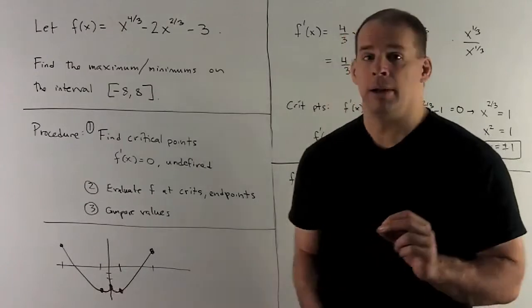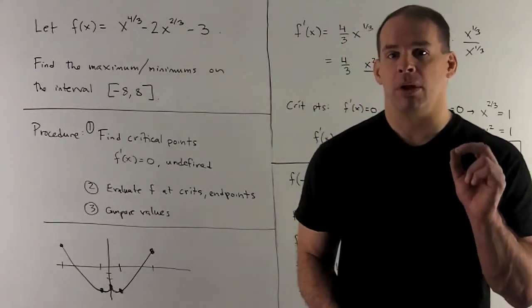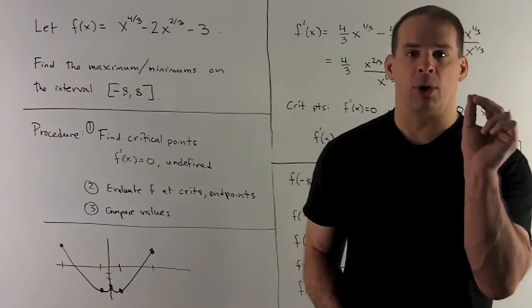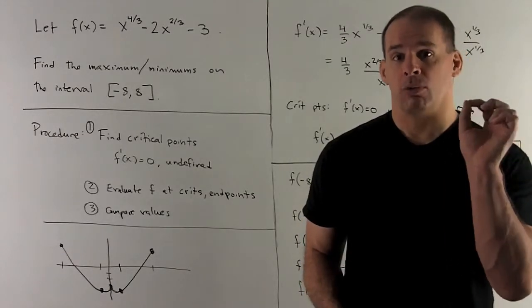You'll also note we have another critical point at 0. Right there, we're going to have a local maximum, meaning it's not a maximum for the whole function in the region, but if we just look at a tiny enough neighborhood, it's going to be the maximum right there.